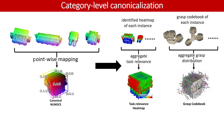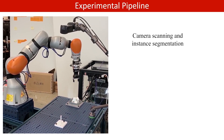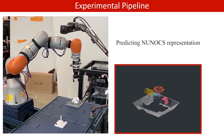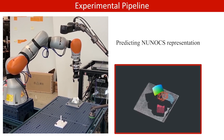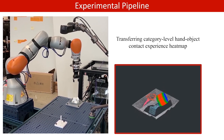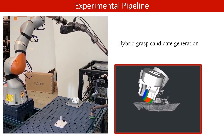Our proposed NUNOX representation allows unifying the object instance into a canonical space, where dense correspondence can be established to aggregate each training object instance's knowledge. The camera takes the point cloud of the scene and performs instance segmentation, predicting the NUNOX representation, transferring the category-level hand-object contact experience heatmap, and enabling hybrid grasp candidate generation via transferring the grasp codebook and sampling over the observed point cloud.